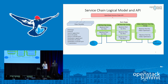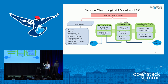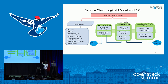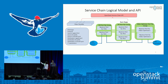Each service function consists of multiple instances. For example, the firewall service function consists of two instances, IPS consists of three instances, and the video optimizer consists of two instances — these are for load distribution purposes. Each service function instance is represented by a neutron port, and those neutron ports are grouped together to form the port pair group. The port chain is specified by an ordered sequence of port pair groups, so traffic from a source goes through the first port pair group for load distribution, then the second and third service functions, and reaches the destination.